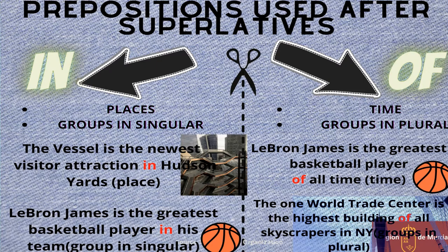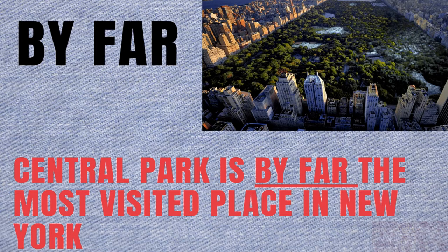Examples are very clarifying, so have a look at these. 'The Vessel is the newest visitor attraction in Hudson Yards' — that is a place. 'LeBron James is the greatest basketball player in his team' — group in singular. Or 'LeBron James is the greatest basketball player of all time.' And 'The One World Trade Center is the highest building of all the skyscrapers in New York' — groups in plural. 'By far' can be used to modify the superlative degree and it is quite emphatic. 'Central Park is by far the most visited place in New York.'